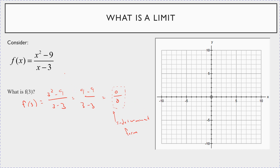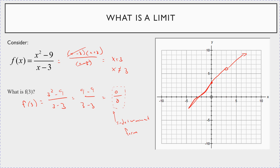Let me show you what the graph looks like. If you factor this out, it factors into x minus 3 times x plus 3, and you'll notice that those cancel. So this function looks like the graph of x plus 3, except you cannot have x equal to 3. If you were to graph this, it would look like a straight line, just with a hole in it when x is equal to 3.